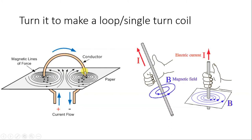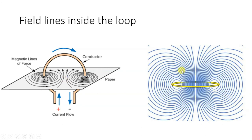As we turn the conductor, on this side the direction of current is going from top to bottom, so as per the right hand thumb rule, the field here is in clockwise direction, while it was anticlockwise on the other side. Because of the turning, clockwise and anticlockwise directions match each other, and the field inside the loop gets strengthened — both fields add up in the center of the loop. Stronger magnetic field is indicated by crowding of the lines, so in the center of the loop we have a stronger magnetic field compared to the outer side.